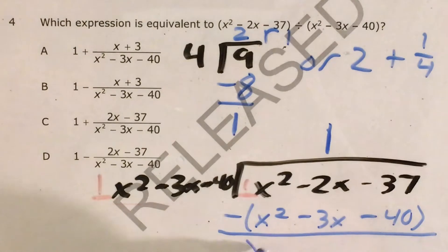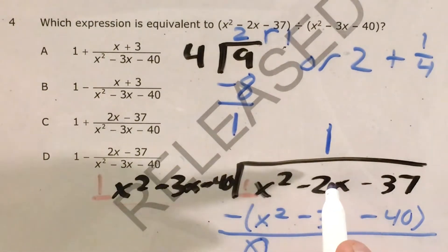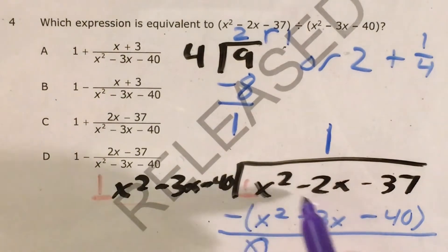So x squared minus x squared is just nothing. And now negative two x minus negative three x, I'm first going to go ahead and say that because this is a negative sign, if I distribute this negative sign to negative three x, it'll become positive three x.